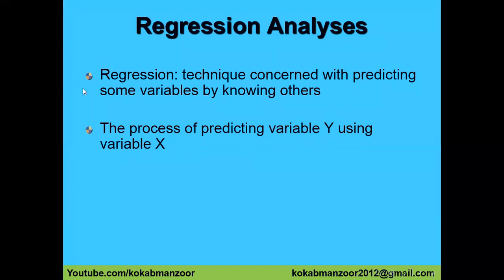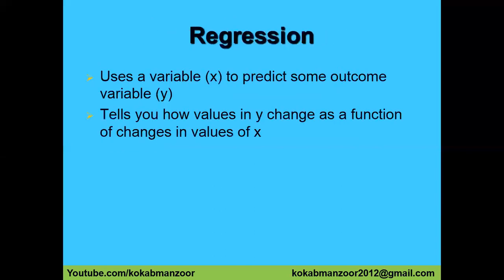Regression is a technique concerned with predicting some variables by knowing others. For example, if smoking causes cancer, we want to know how much increase in cigarettes can lead to what degree of cancer — cigarette is the independent variable and cancer is the dependent variable. Similarly, we want to see whether advertisement increases sales: advertisement is the independent variable and sales is the dependent variable, so how much increase in advertisement leads to how much increase in sales.